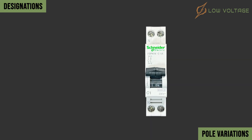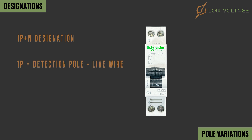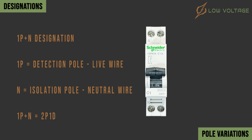This is a one pole plus neutral MCB, having a 1P+N designation, so it can be considered as a two poles MCB. One is for detection used for the live wire, and the other is for isolation used for the neutral wire. So it can also be defined as two poles, one detection, or 2P1D, having one detection symbol and one isolation symbol.